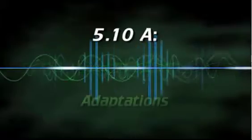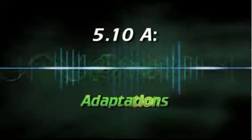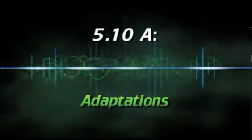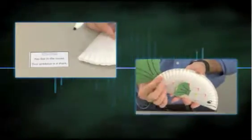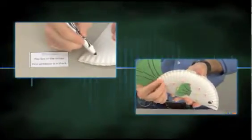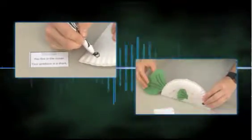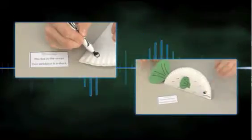5.10a Adaptations. In this activity, students create an animal with specific adaptations to help it evade predators and survive in its environment.